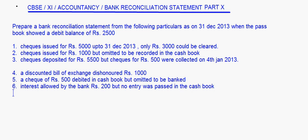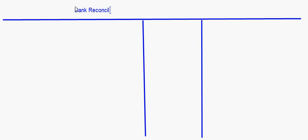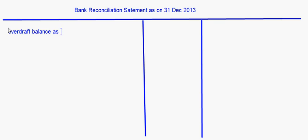Now these are the items that are given. This has to be put in the Bank Reconciliation Statement. Now let's make the Bank Reconciliation Statement. Bank Reconciliation Statement as on 31st December 2013. This is an overdraft balance. Overdraft balance as per passbook: Rs. 2,500.